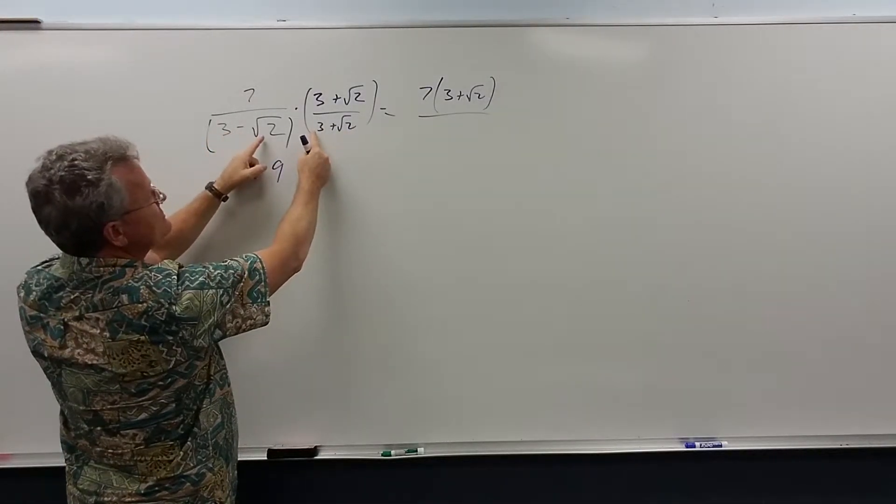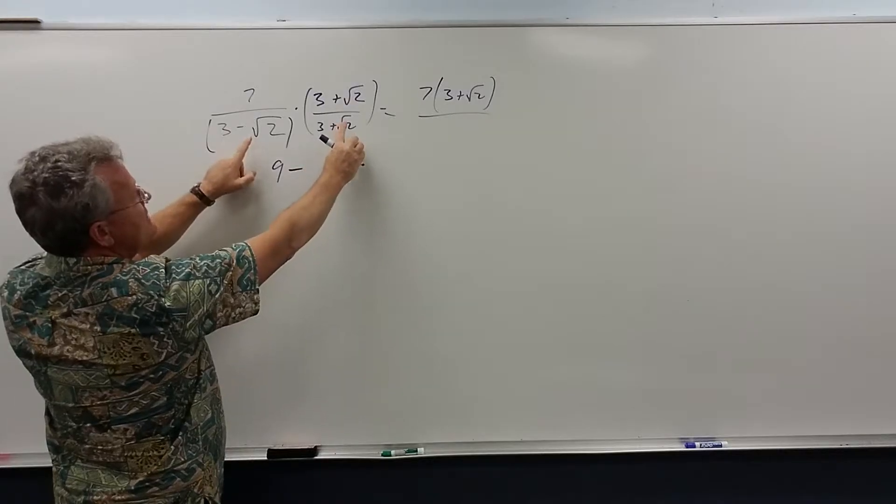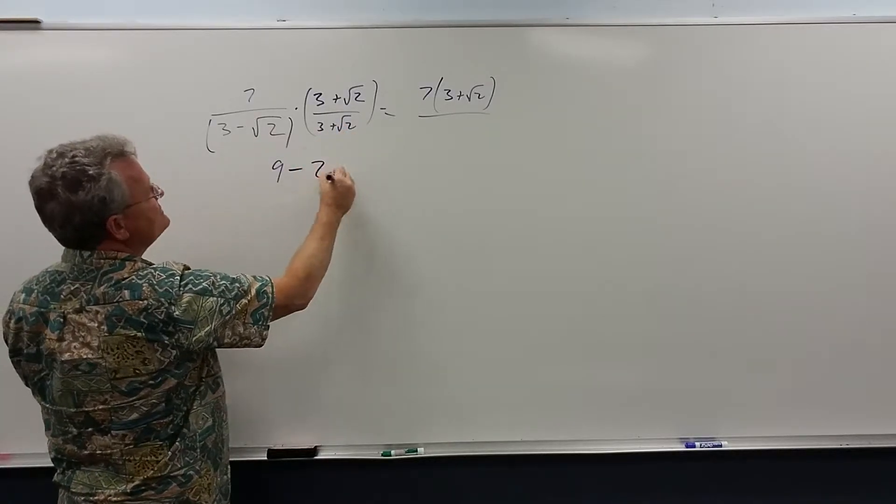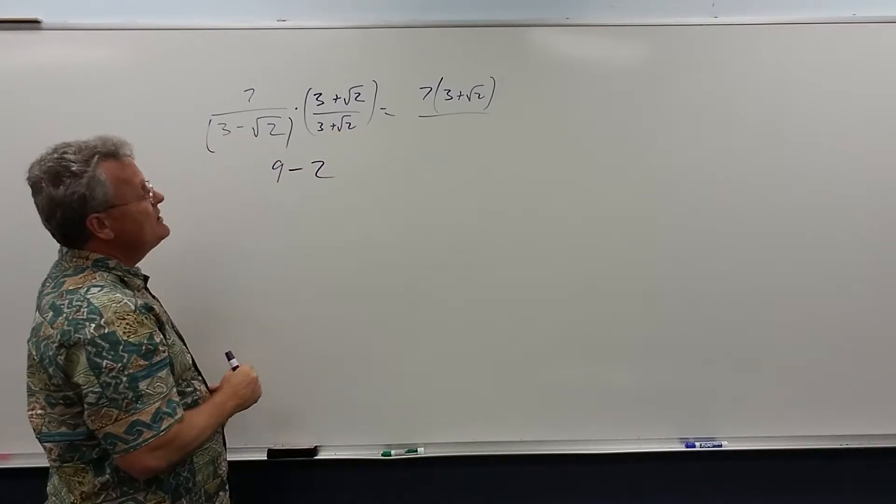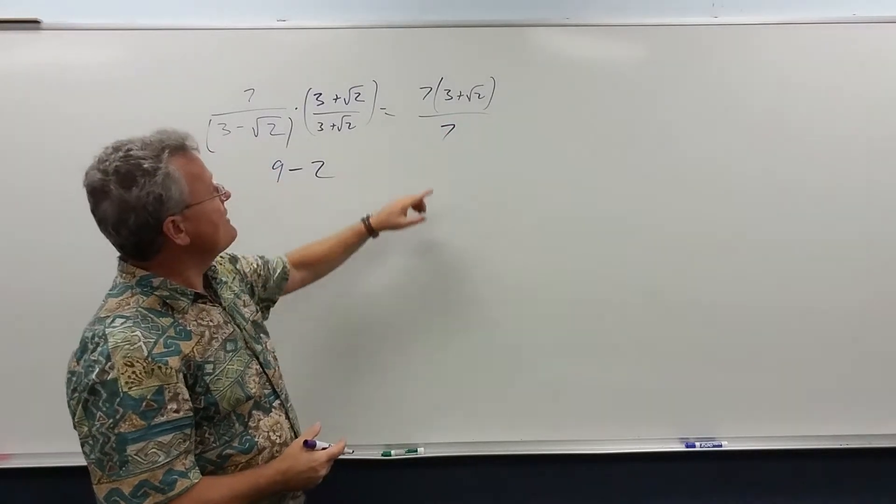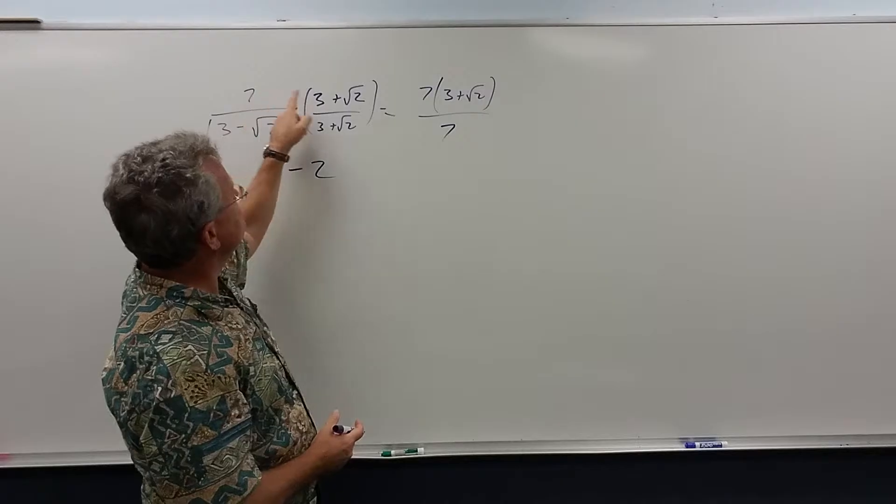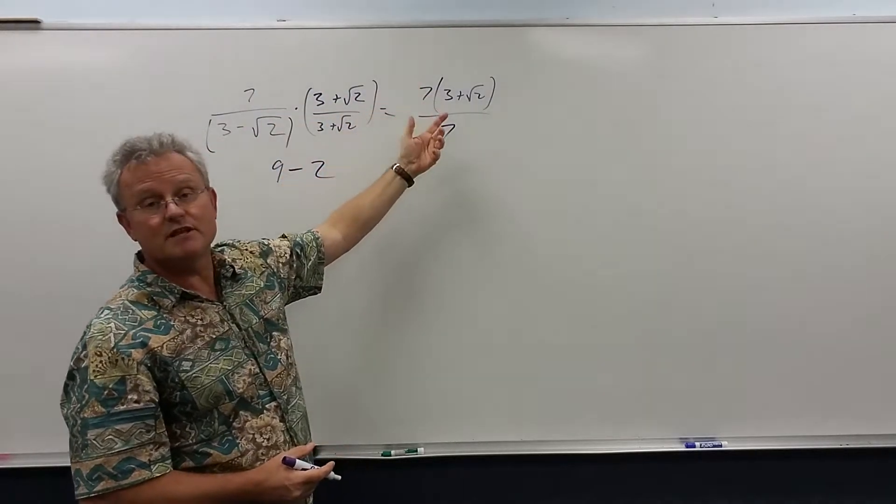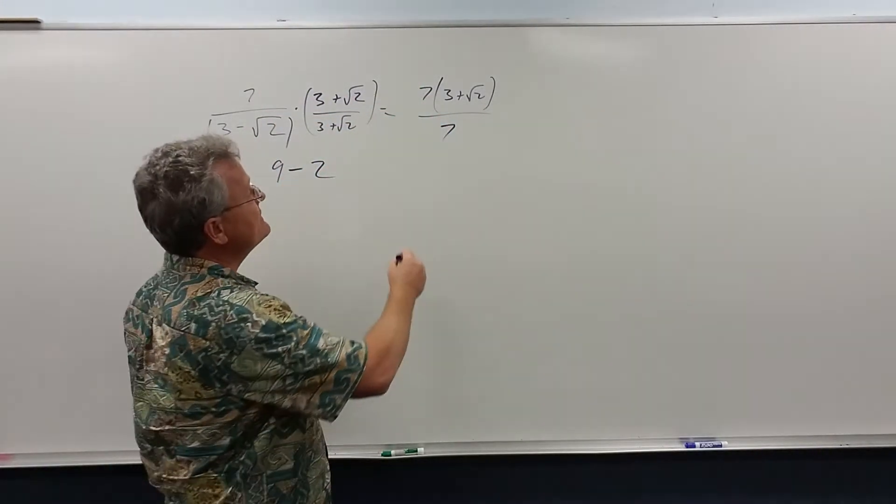The last terms multiplied to a negative 2 and 9 minus 2 is 7. This is the reason why I wait to distribute this numerator because sometimes they cancel which is exactly the case here.